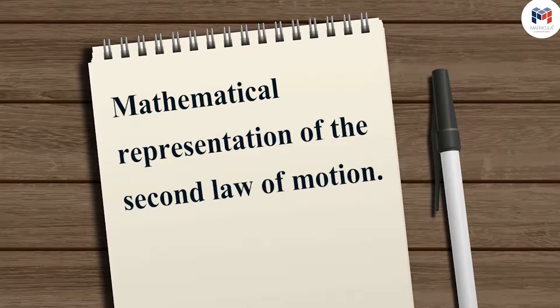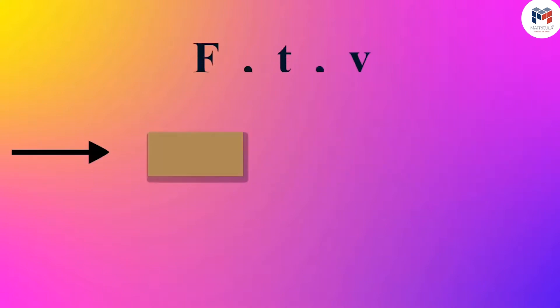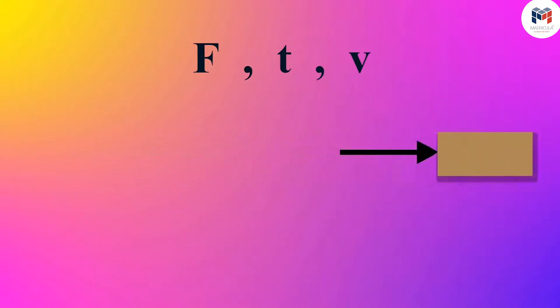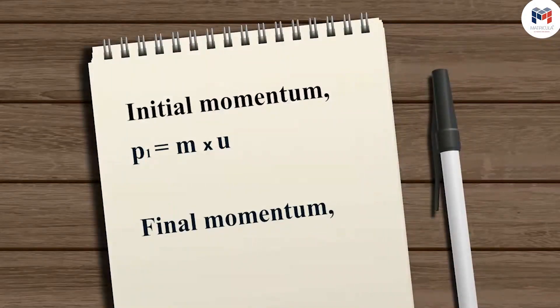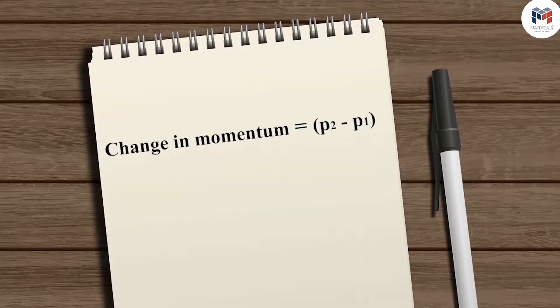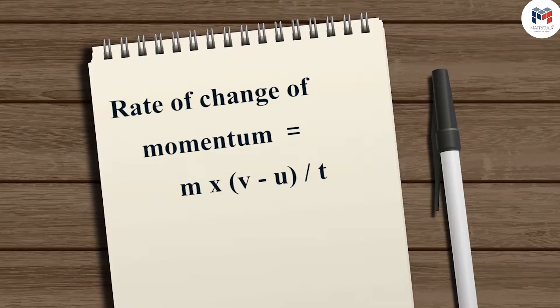Now, let us study the mathematical representation of the second law of motion. Let us consider an object of mass M moving along a straight line with an initial velocity U. After the application of a constant force F throughout the time T, its velocity becomes V. We can represent the initial momentum as P1 = M × U, and the final momentum as P2 = M × V. Therefore, the change in momentum equals P2 − P1 = MV − MU. Hence, the rate of change of momentum equals M(V − U) divided by T.